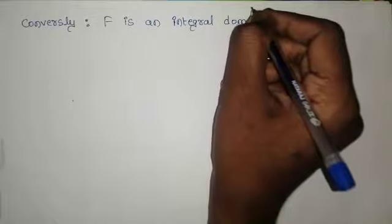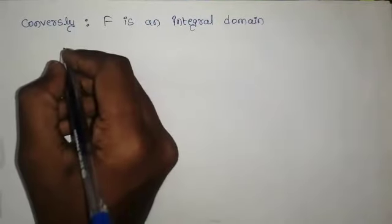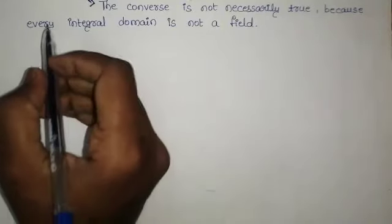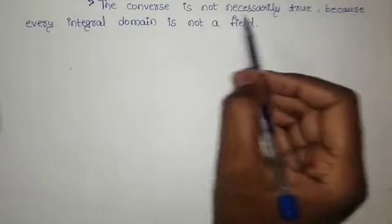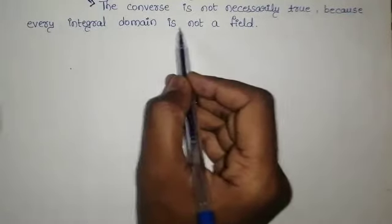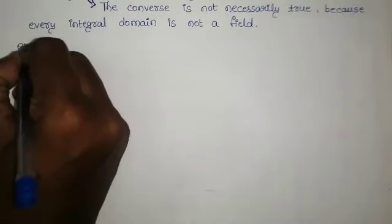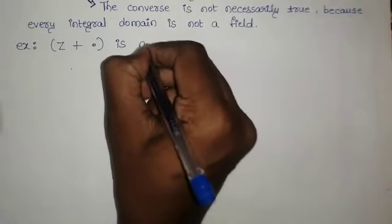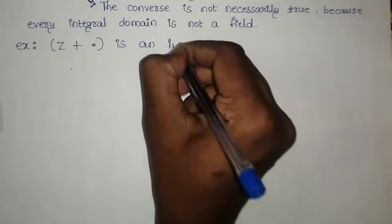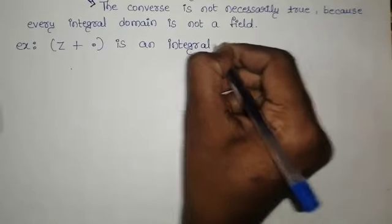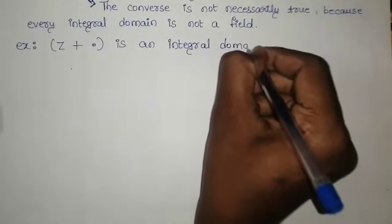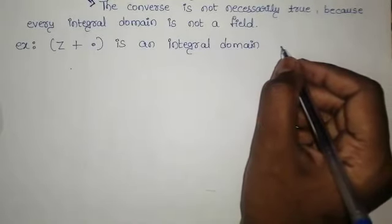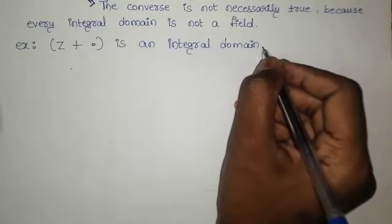For the converse part: the converse is not necessarily true, because every integral domain is not a field. Consider Z+ · which is an integral domain — it satisfies all the conditions of commutative ring with unity and ring without zero divisors, so it is an integral domain. But it is not a field.